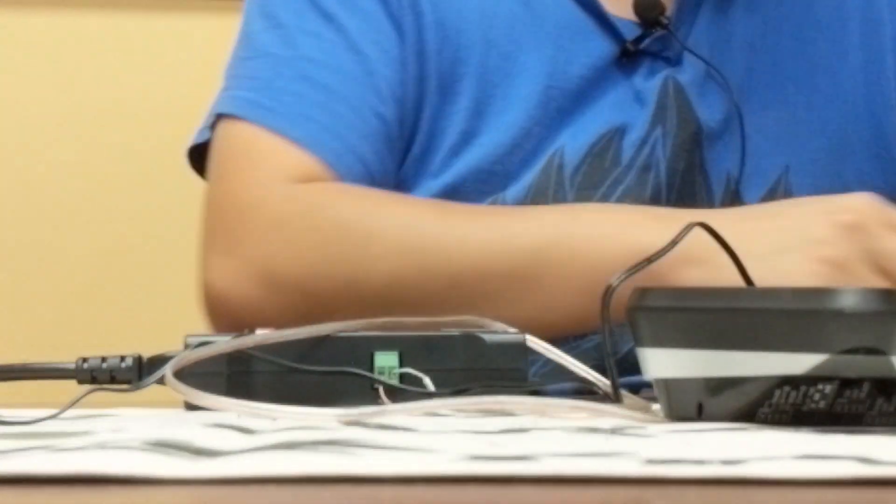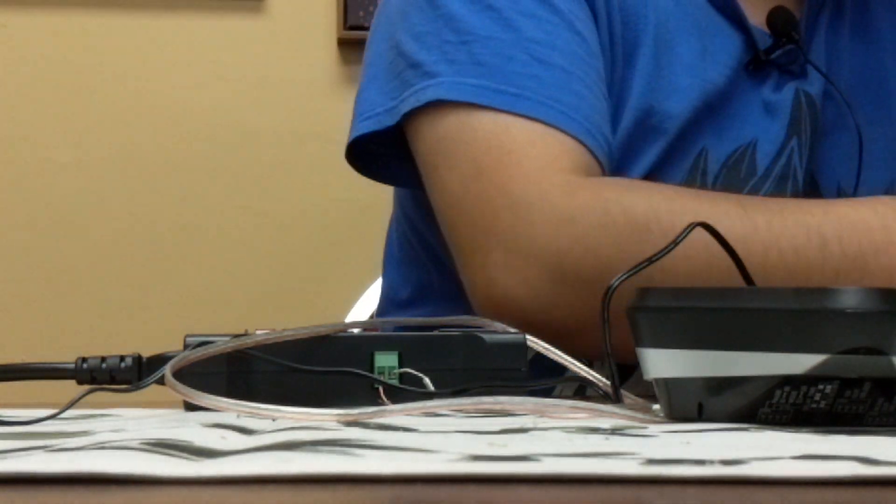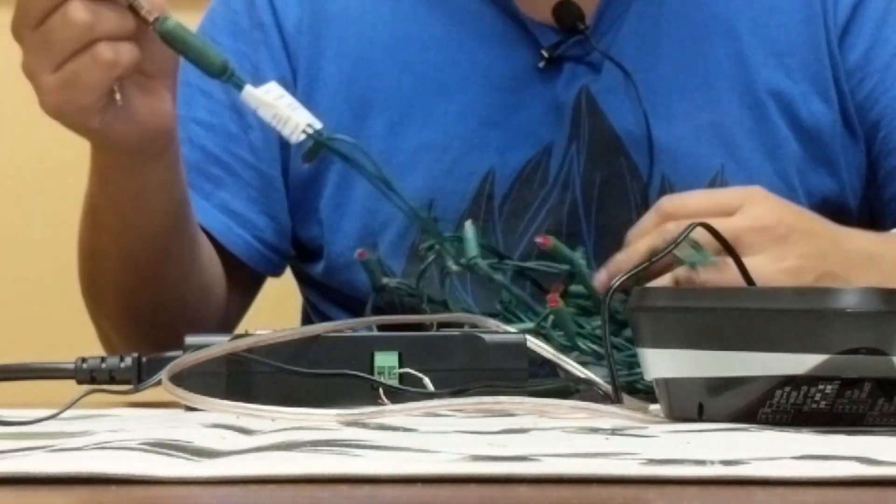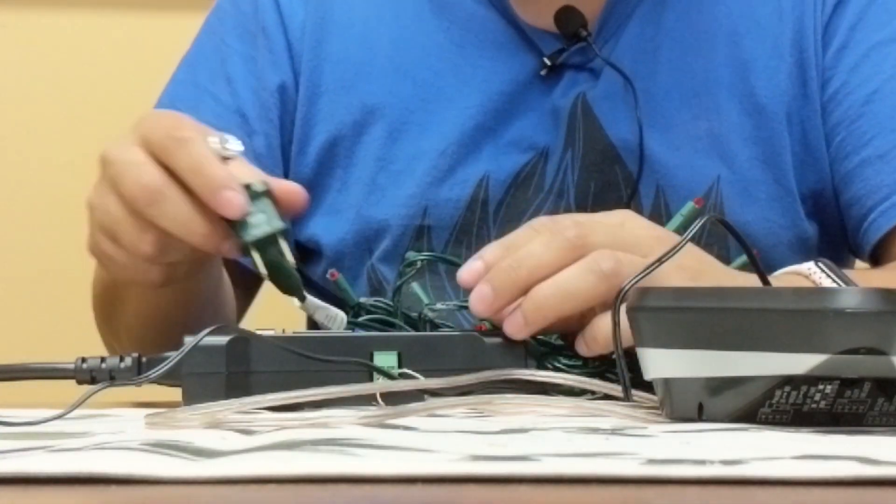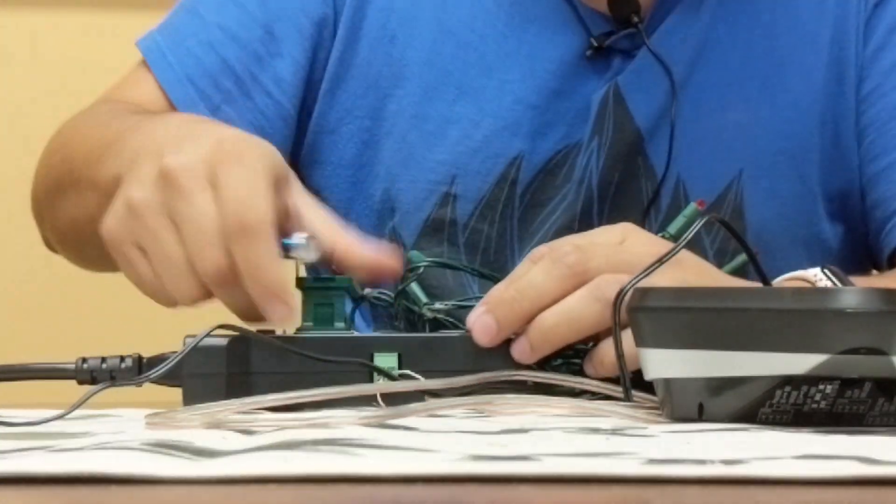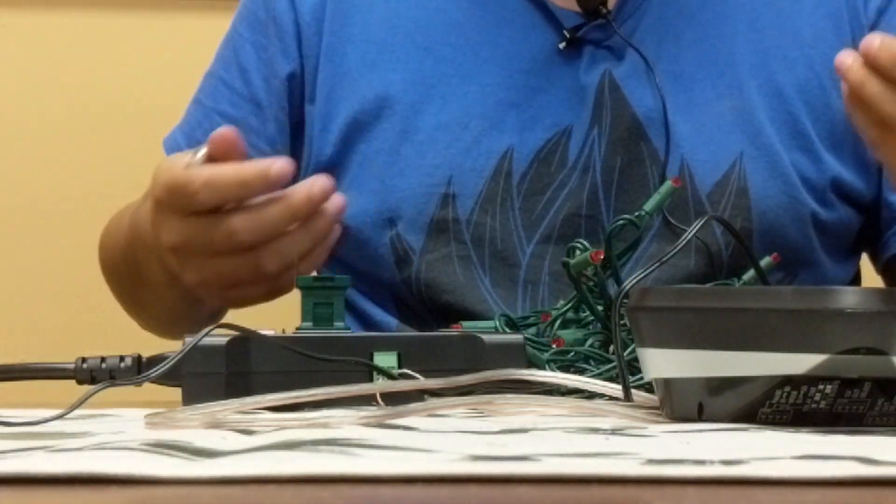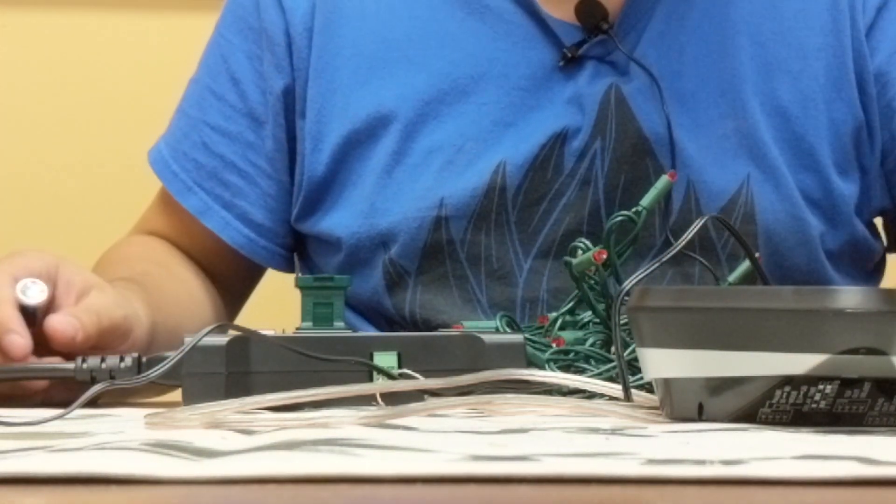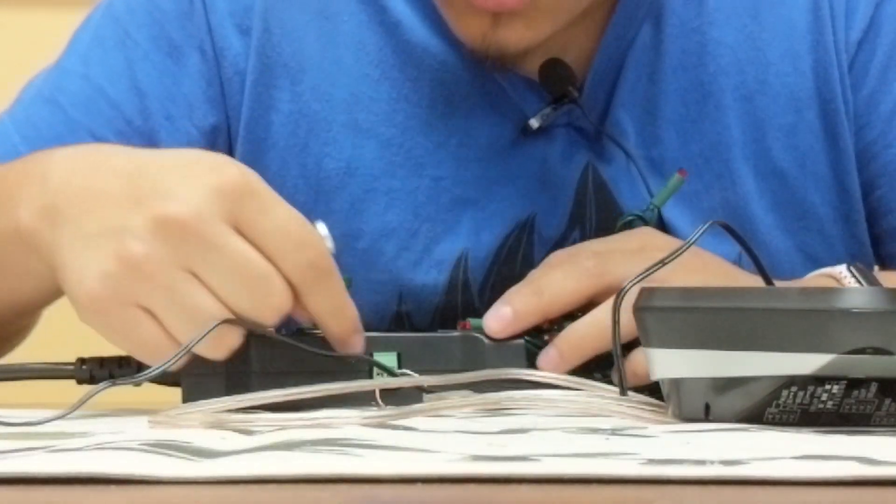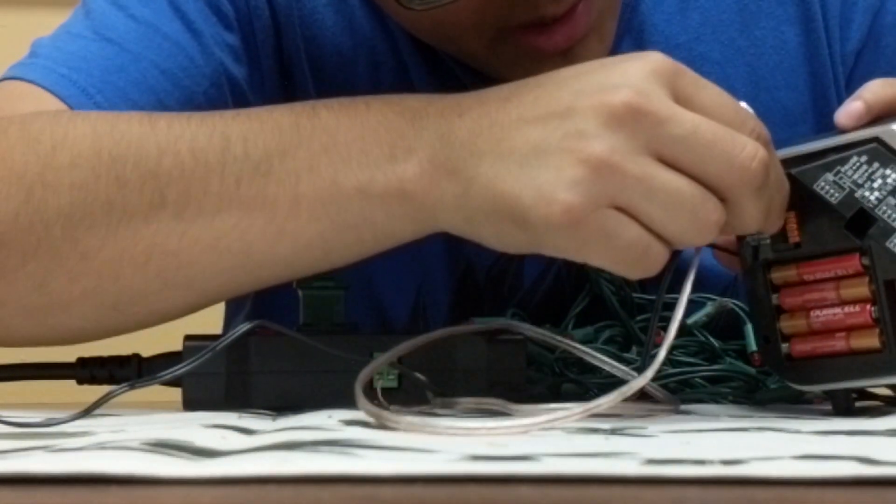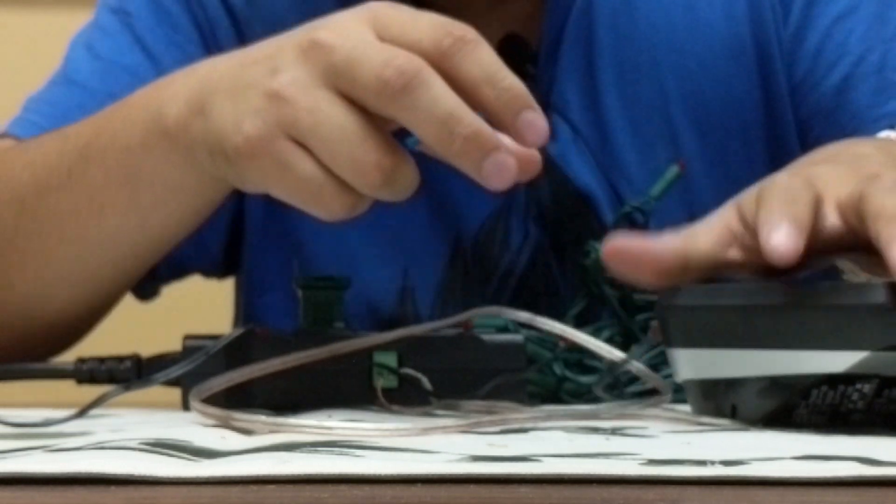Alright, once that's done, we're going to want to connect our Christmas lights, and we have our Christmas lights here, and we're going to put it to normally off, because we don't want these on all the time. We just want them to come on whenever someone enters our property. So let's make sure everything works. No wires are crossing. No wires crossing. Perfect.